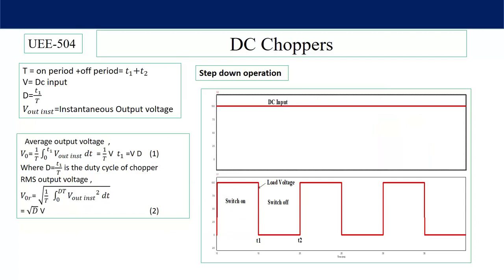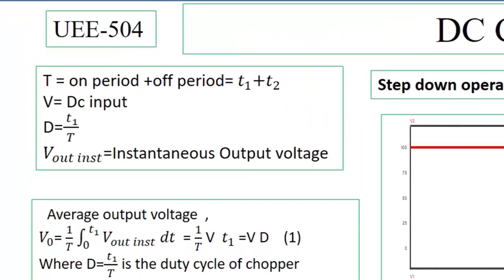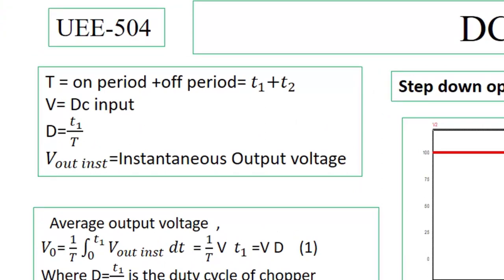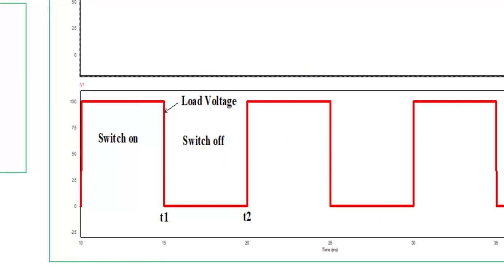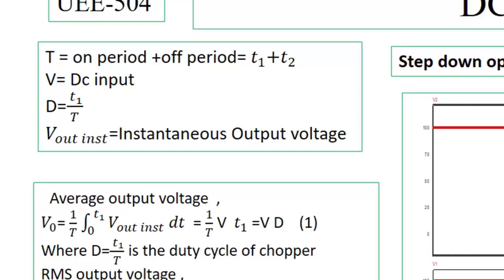Let's analyze this DC step down converter. T is equal to on period plus off period, is known as complete time period of the switching pulses. Here in DC choppers, generally T is kept constant—that means frequency is constant—and on period or off period is varied to vary the output voltage. V is equal to DC input voltage, and D is a very important term known as duty cycle, defined as ratio of on time divided by total time period. V_out inst is your instantaneous output voltage at any instant t.